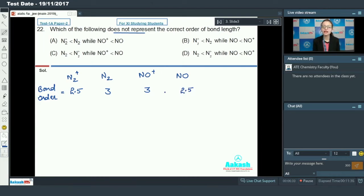If we compare, N2+ has lower bond order so it will have greater bond length. So, bond length of N2+ is greater than N2, and bond length of NO is greater than NO+ because NO+ has higher bond order. This is the correct order of bond length. Remaining other orders are incorrect.